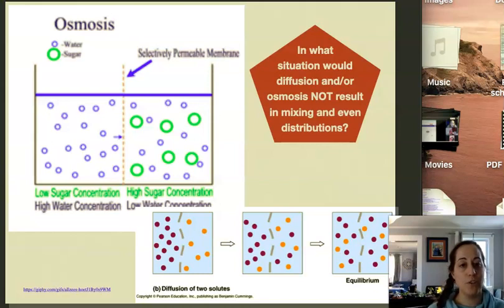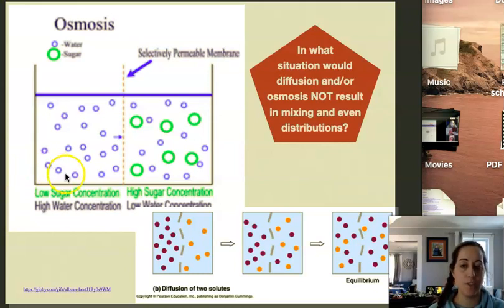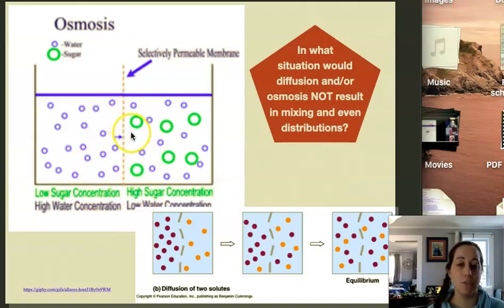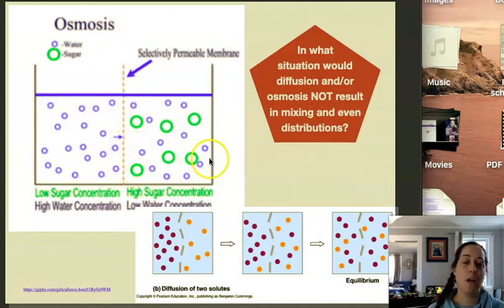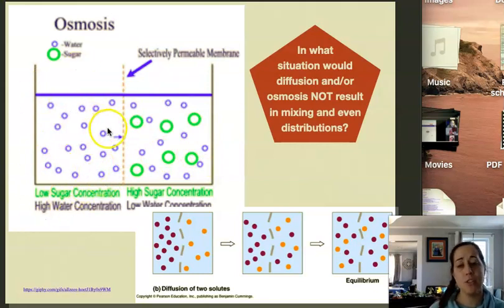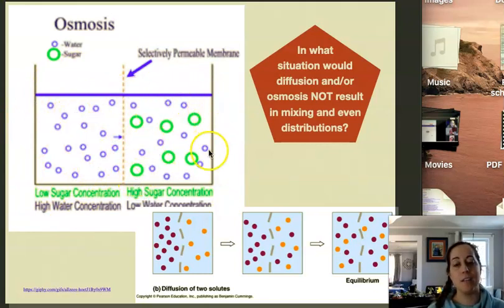In what situation would diffusion and/or osmosis not result in mixing and even distributions? It might result in mixing, but not necessarily an even distribution, in a case where we have a selectively permeable membrane where certain molecules can move through and others cannot. So again, we're not seeing sugar on the other side of the membrane here, and it's going to remain that way. But we are still going to dilute and cause mixing because the water can move through.